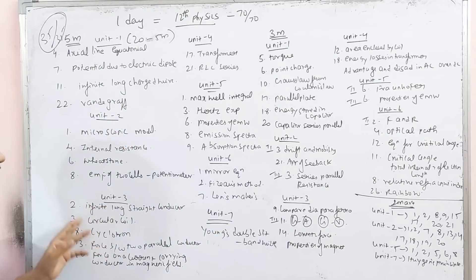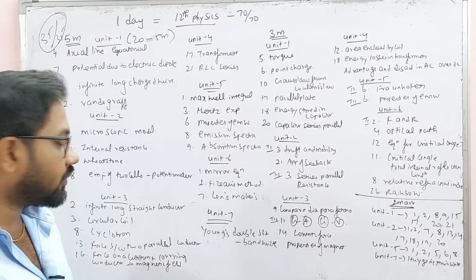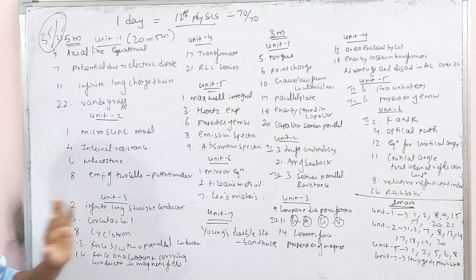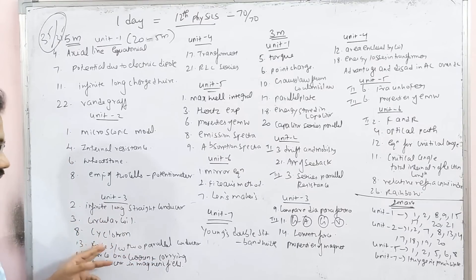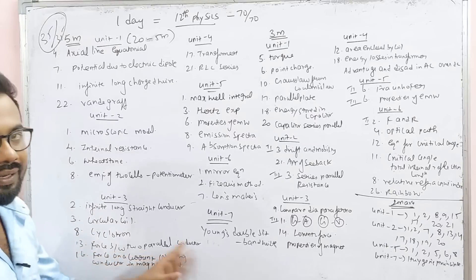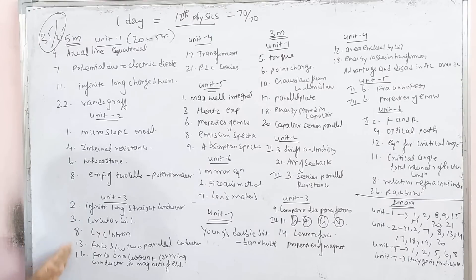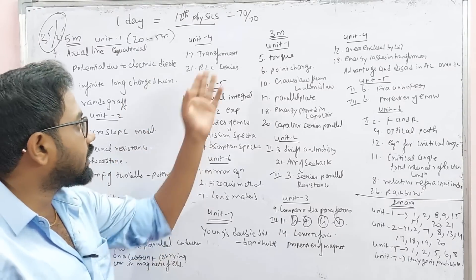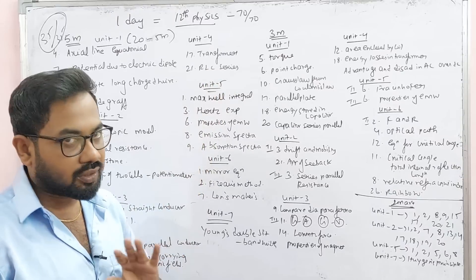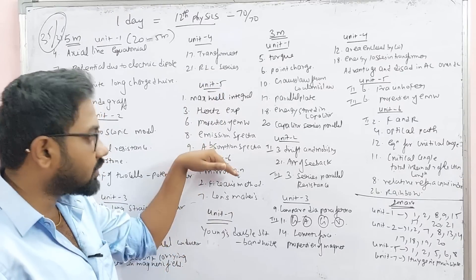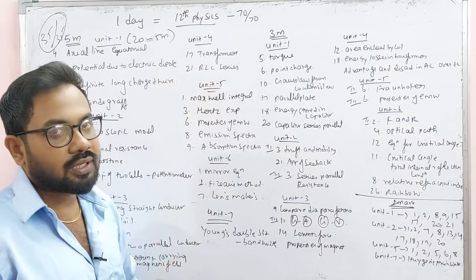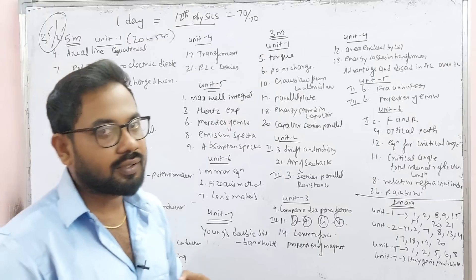Unit 3 is Infinite Long Straight Conductor, Biot-Savart's Law First Application. Third question is Circular Coil. Eighth question is Cyclotron. Thirteenth question is Force Between Two Parallel Conductors. Sixteenth question is Force on Current Carrying Conductor. Unit 4 is Transformer and RLC. This is the orientation of the coil.